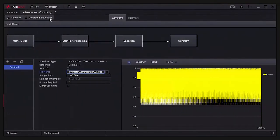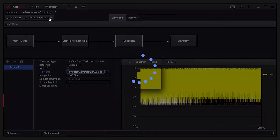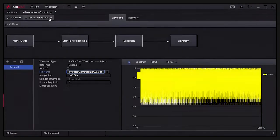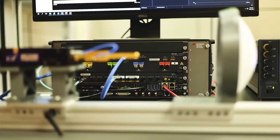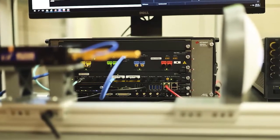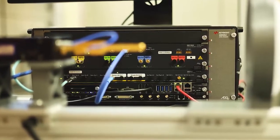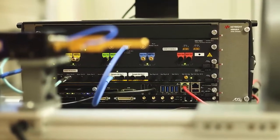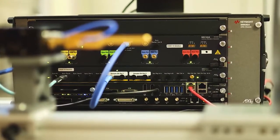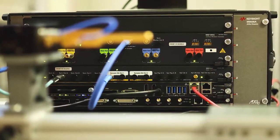This will read in the file and download it to the M8199A AWG. So we've downloaded the waveform to the M8199A AWG. Now this is a 4-channel AWG with a sample rate of 128 giga sample per second. So we're using it to generate an IF signal centered at 25 gigahertz.